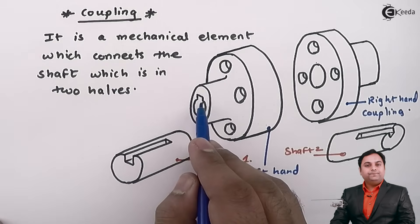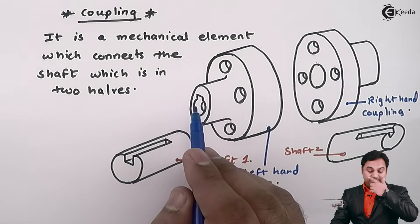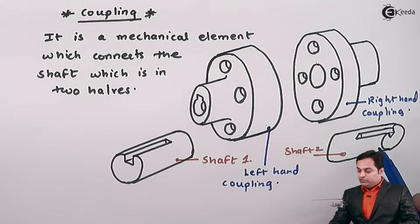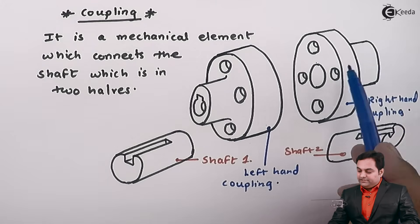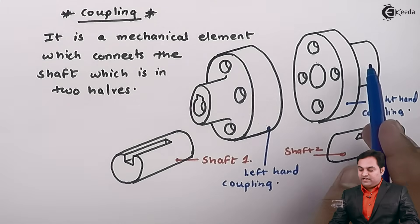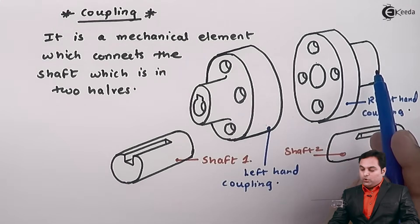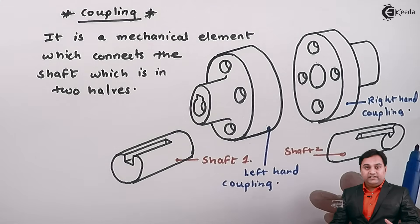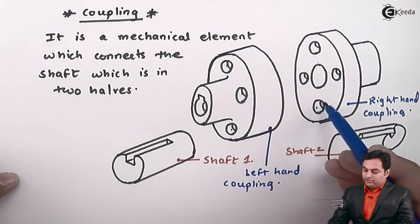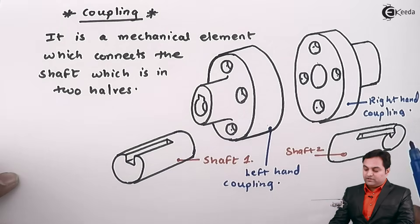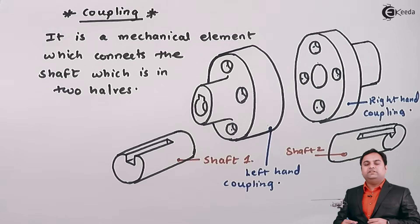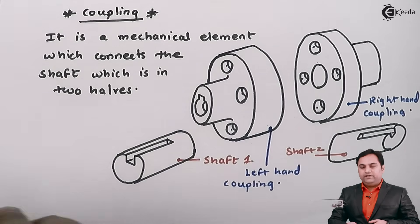The connection is made using a keyway — we insert a key which goes into the shaft and this hub. Next, shaft two is connected in the right hand coupling using a key, whose half portion is in the shaft and half is in the hub. After inserting both shafts, we join the two couplings by aligning the holes on the circumference and inserting bolts and nuts so the coupling becomes tight as a single connection.